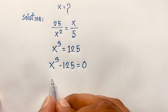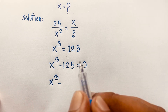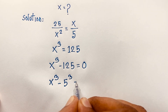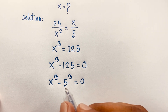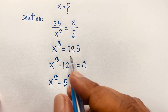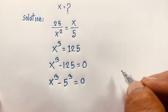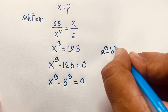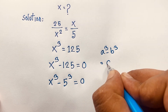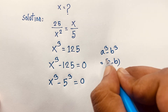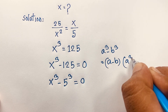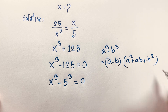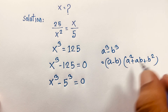We can see that x to the power 3 minus 125 is x cubed minus 5 cubed, since 5 times 5 times 5 equals 125. This is a difference of cubes: a cubed minus b cubed equals a minus b times a squared plus ab plus b squared.